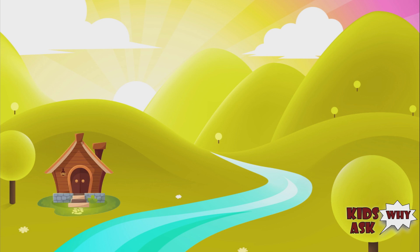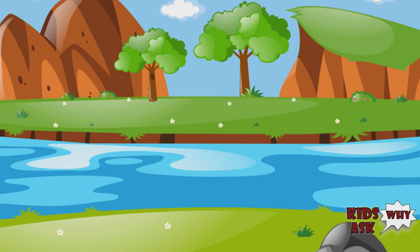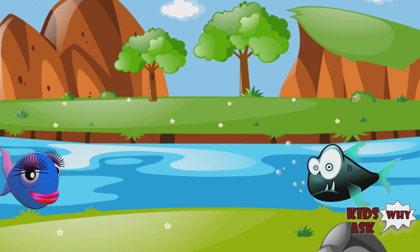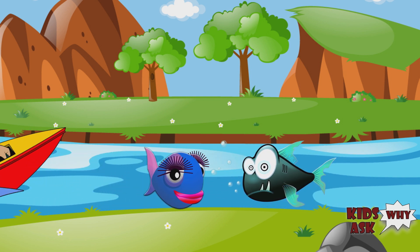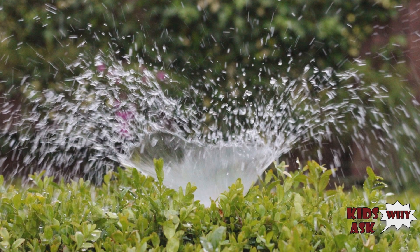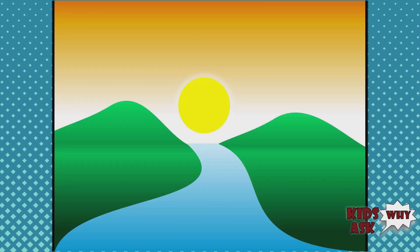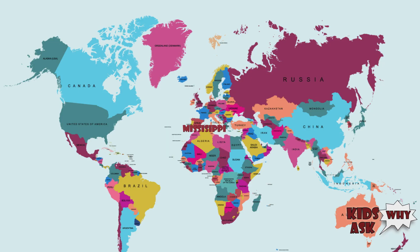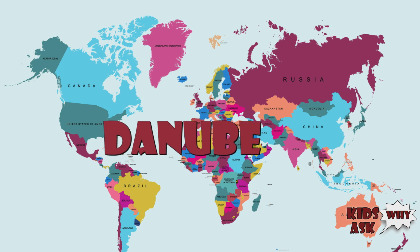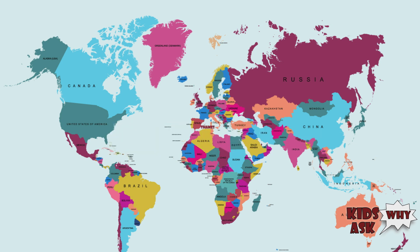Most settlements were built along major rivers. Rivers provide us with food, energy, recreation, transportation routes, and of course water for irrigation and for drinking. Here are some famous rivers: the Nile, Mississippi River, Amazon River, Danube, Mekong, Volga River, and the Thames River.